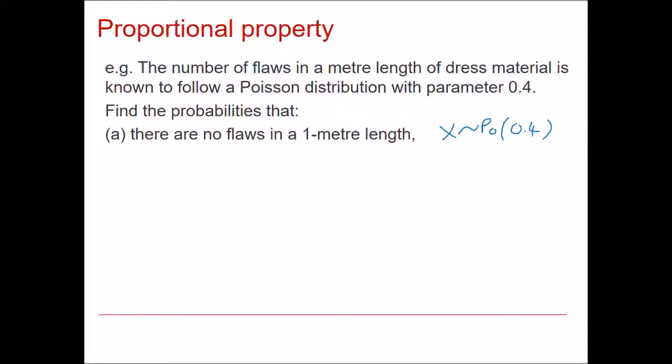Now that we know this fact, we could extend our model to different lengths of cloth. So if we wanted to know how many flaws there were in a 3 metre length of cloth, we would multiply our mean by 3. And similarly, if I wanted to find how many flaws in a half metre of cloth, I could just divide by 2.